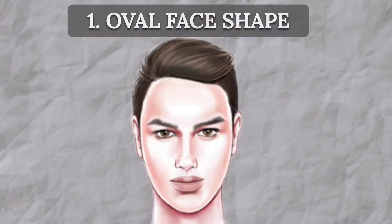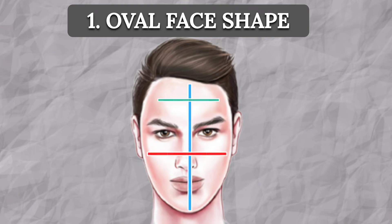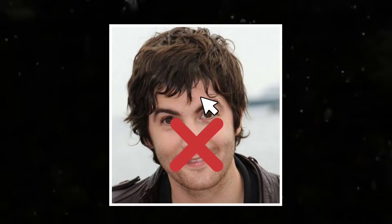Let's start with an oval shape. Most hairstyles go with it. The oval face shape is longer than it is wide at the cheekbones and forehead. With this face shape, it is better not to cover your forehead so that your face does not appear too round.